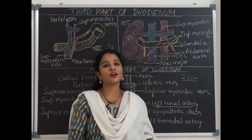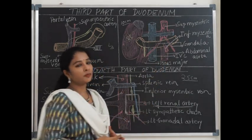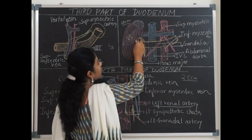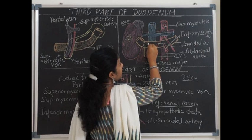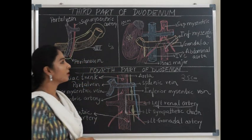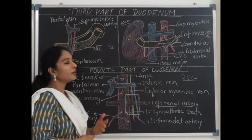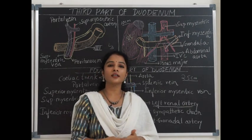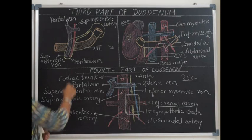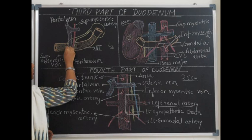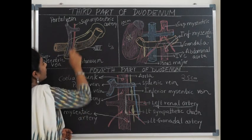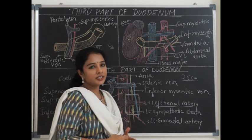The third part of duodenum is the horizontal part and the longest of all parts, approximately 10 centimeters — around 4 inches — in length. It continues from the inferior duodenal flexure on the right side, crosses the inferior vena cava and abdominal aorta, then ascends to form the fourth part. It is retroperitoneal — anteriorly covered by peritoneum except where the superior mesenteric vessels pass, where the root of the mesentery gets reflected.